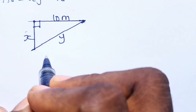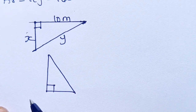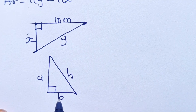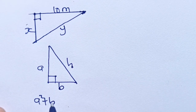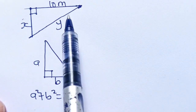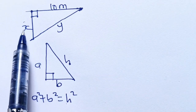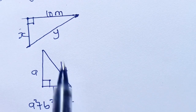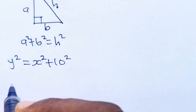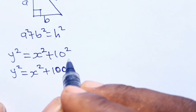According to the Pythagorean theorem, in a right-angle triangle, the side facing the right angle is the hypotenuse h, and a squared plus b squared equals h squared. From our drawing, the hypotenuse is y, so: y squared equals x squared plus 10 squared. Therefore, y squared equals x squared plus 100.